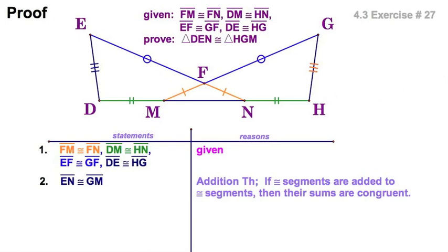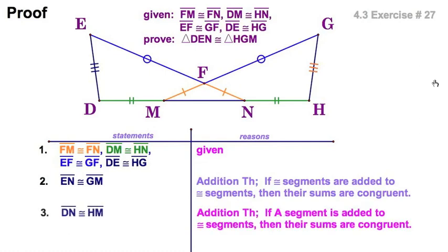And then you'll notice here, slightly different here, I'm going to go to line 3. It's also a segment addition, but it's a little different because this green segment added to MN is the same as this green segment, congruent, added to the same segment. So if a segment, that is MN, is added to congruent segments, the sums are congruent. A little picky point there, but you know we're picky in class. So you've got the addition theorem used twice, and you've got a bunch of tick marks everywhere. It looks like we are good to go. We've got side, side, side. And again, let's just check DEN congruent to HGM. It checks out okay.